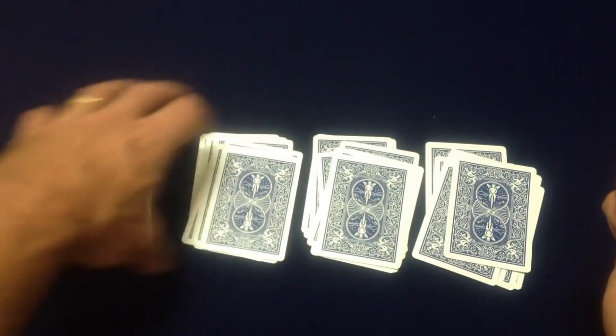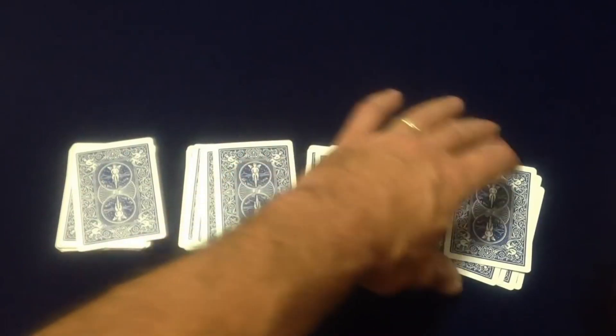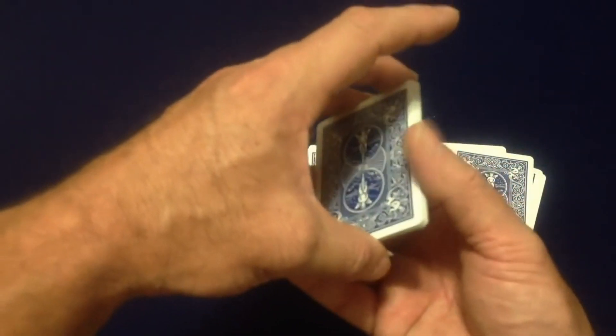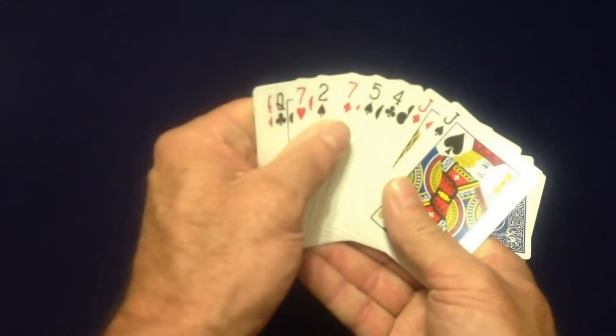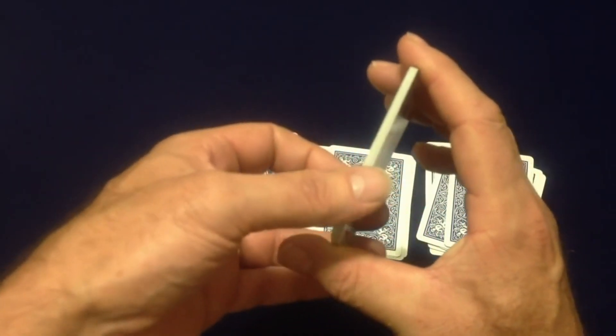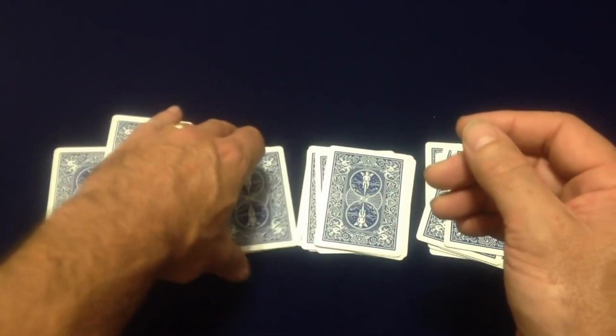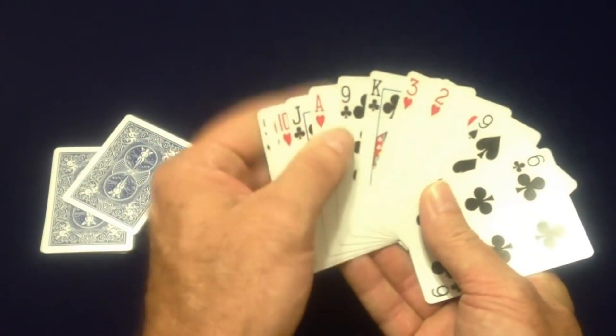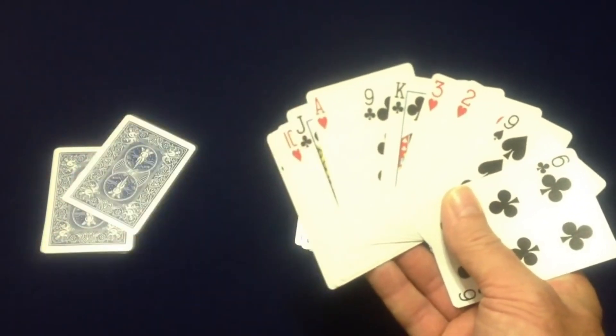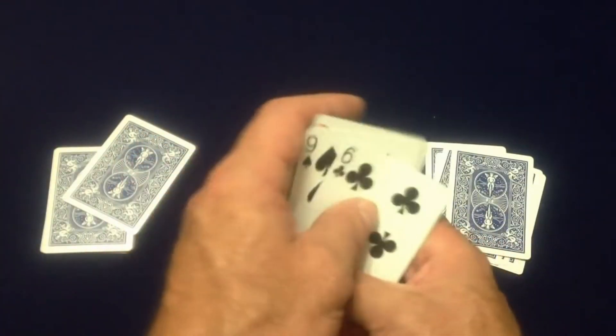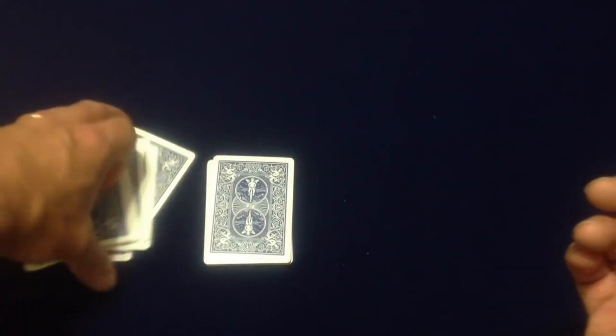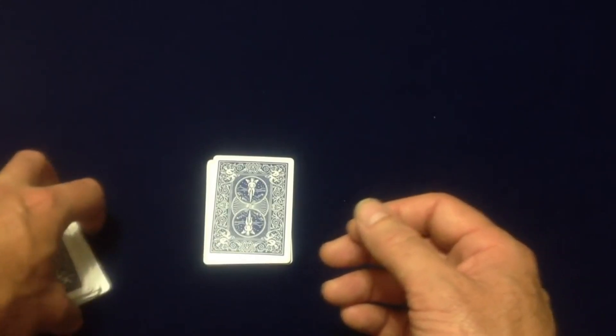Once you have your four piles made, we're going to pick up each pile and have the spectator look for their card. Now remember, we're looking for the Ace of Hearts. We're not supposed to know that, but for the sake of this video, okay, so there's the Ace of Hearts. So the spectator will say, okay, I see my card, it's in that pile.